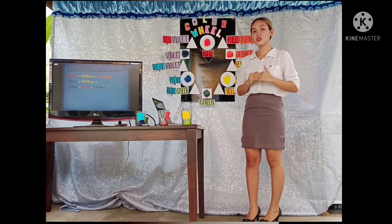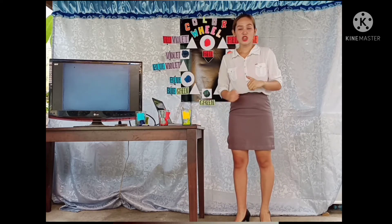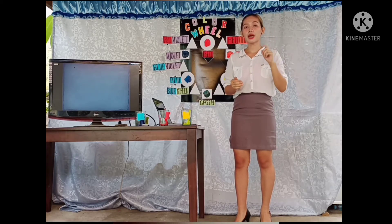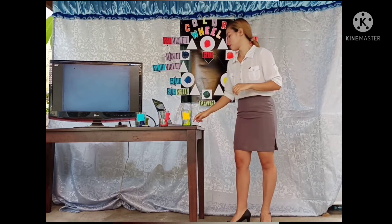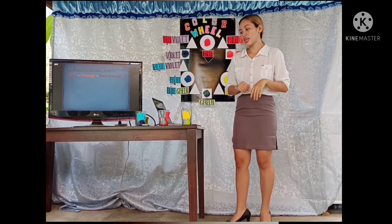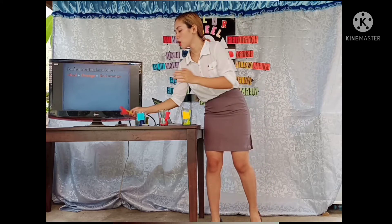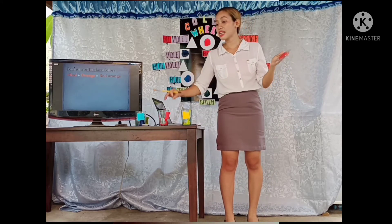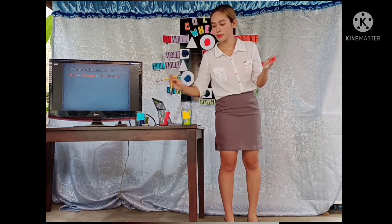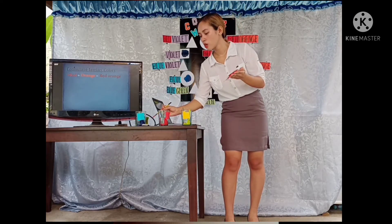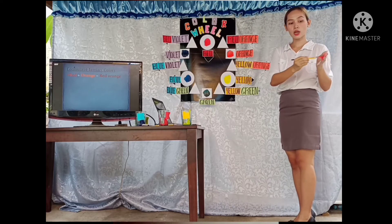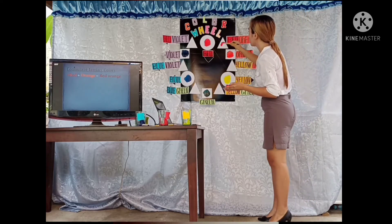Let us proceed to the tertiary colors. What makes a tertiary color? Tertiary colors are a combination of one primary color and one secondary color. The first formula is red plus orange. Since we already have orange, we just add some red to come up with red-orange. Red plus orange becomes red-orange, and we put this color in the chart.